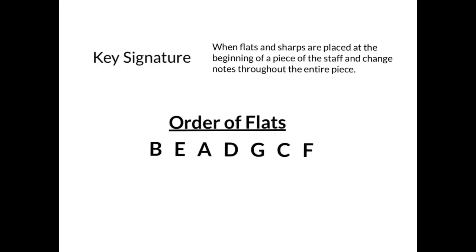For flats, the flats have to be in a very specific order. If we are going to have only two flats, those flats can only be B and E. The order of flats is B, E, A, D, G, C, and F. The way to remember that is you can think "bead" — which sounds like the word bead — and then G, C, F you can think "greatest common factor." So: bead, G, C, F.